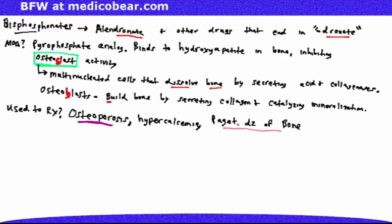A few brief comments about Paget disease of bone: it involves abnormal mosaic bone architecture and is a common localized disorder of bone remodeling caused by an increase in both osteoblastic and osteoclastic activity. The only lab value that is increased in Paget disease of bone is alkaline phosphatase (ALP). Serum calcium, serum phosphorus, and PTH levels will be normal. Another high-yield point is that there is an increased risk of osteogenic sarcoma.